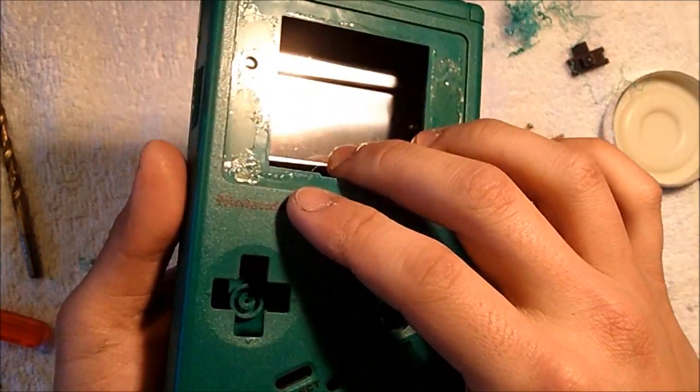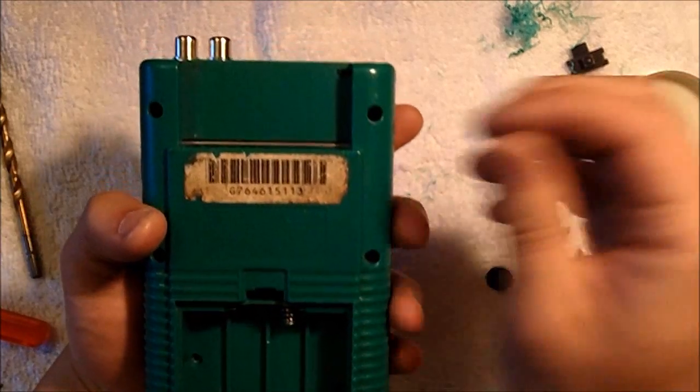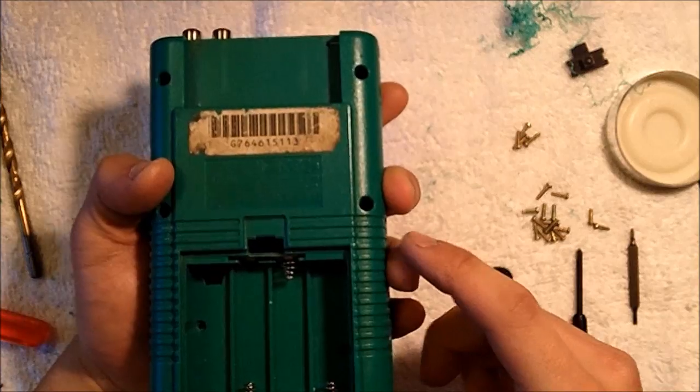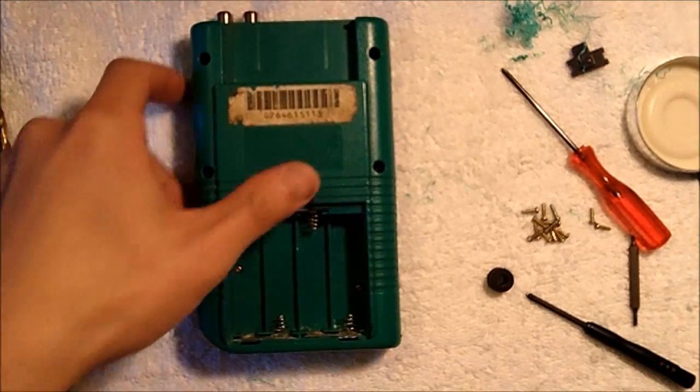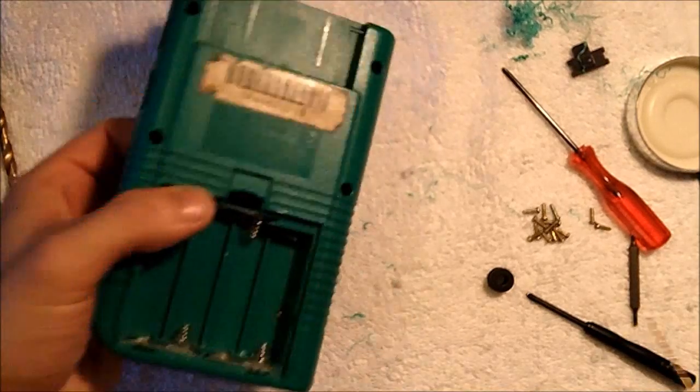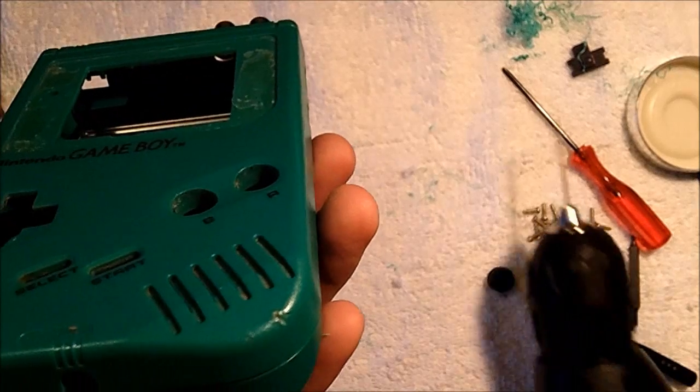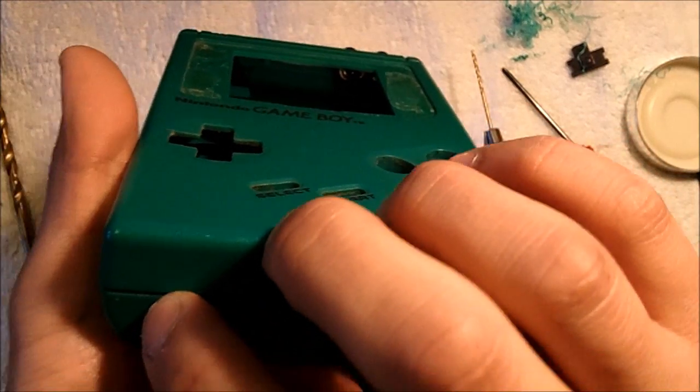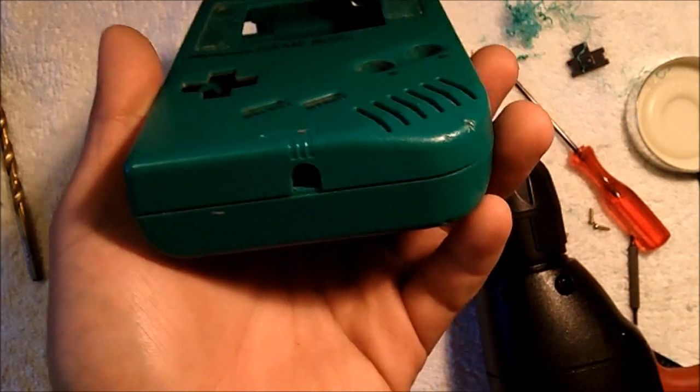After you do that, we'll put the case back together. We'll put the six tri-wing screws back in so that the case doesn't come apart when we try to drill. Now that we have our case put back together, we're going to be drilling using the smallest drill bit to start out with on the lower left-hand portion of the Game Boy case. And what we'll want to do is we'll want to try to get as centered up on the crease as possible when we drill.